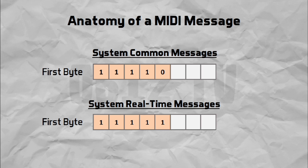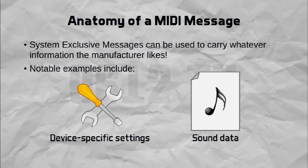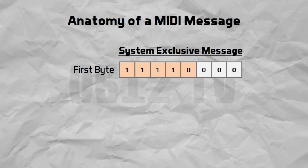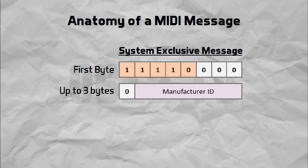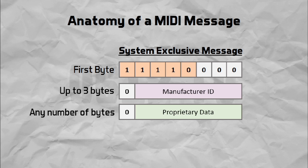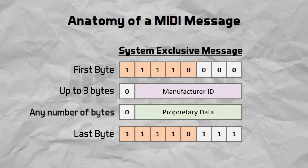One such particular message is very interesting, and that is the system exclusive message. System exclusive messages actually allow manufacturers to build their own proprietary messages. Using this type of message, manufacturers can build special features or other special means of control of their own devices. The first byte of a system exclusive message must be 4 1s followed by 4 0s. All the standard requires you to do is to actually identify yourself in the message. Once the identification is over, a message of any arbitrary length can be sent. The message is actually ended with another special command, which is 4 1s followed by a 0 and 3 1s.